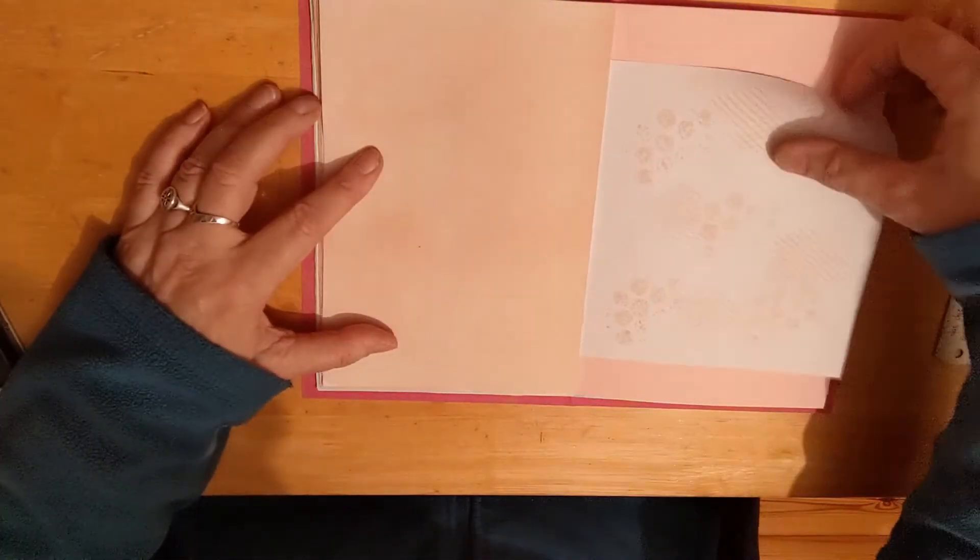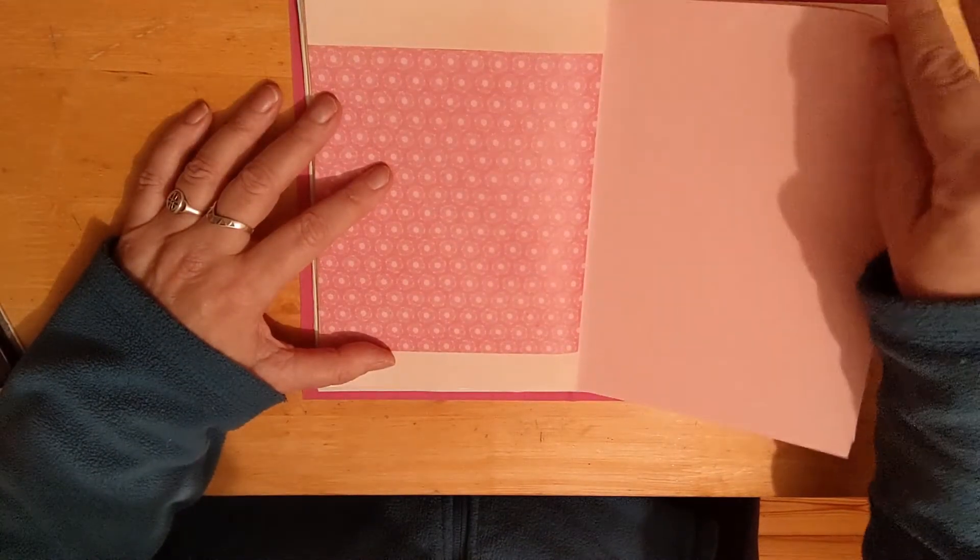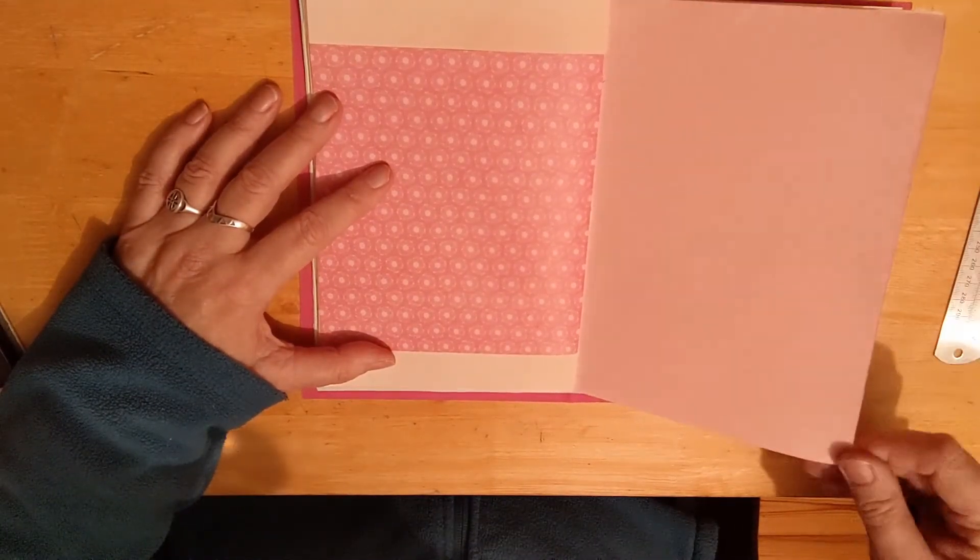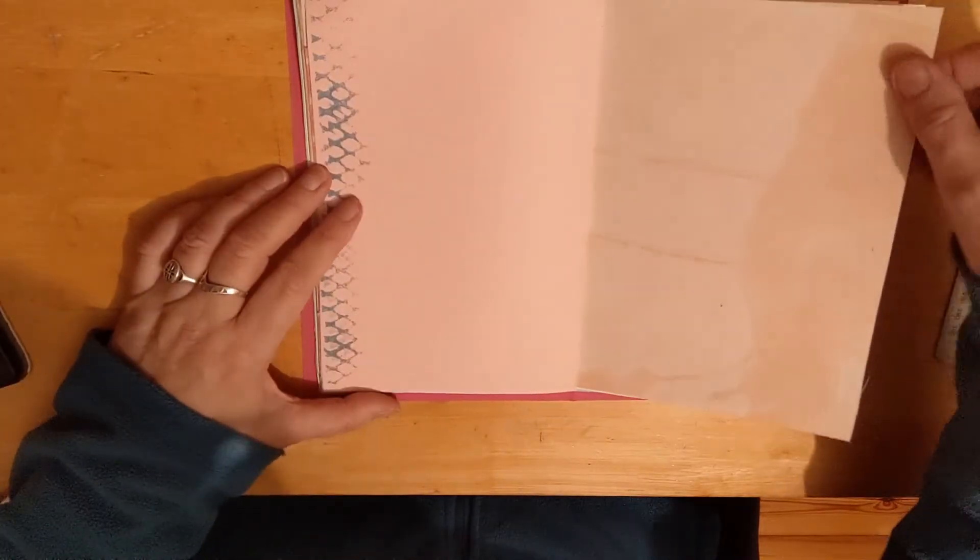More maths copy paper. Onion dyed paper. Little bit of stenciling on the patterned pink paper that I have here. Pink card.